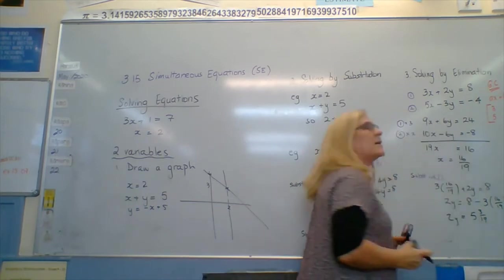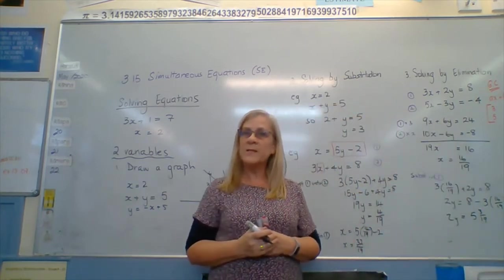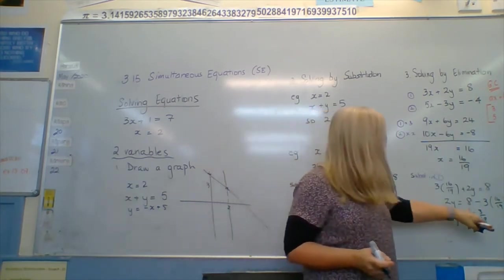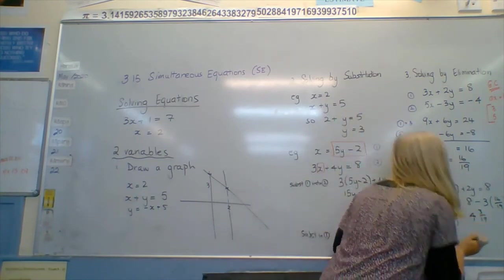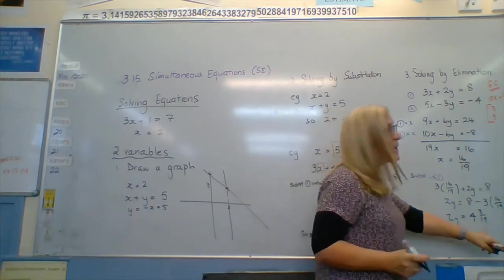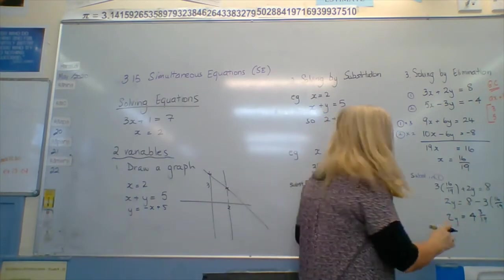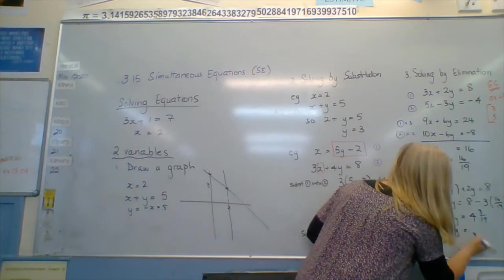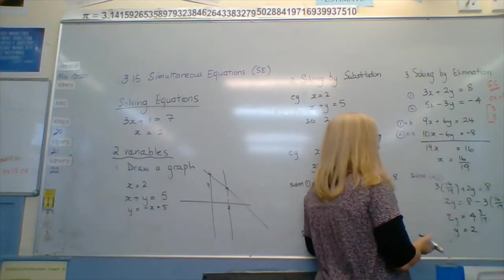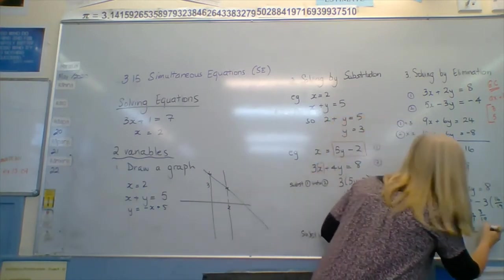We need to divide by 2. So y equals 2 and a half of 3 19ths. How many 19ths? 3 38ths.